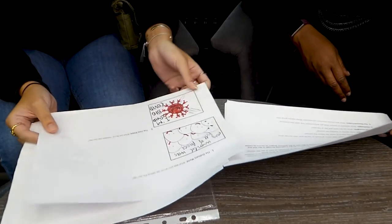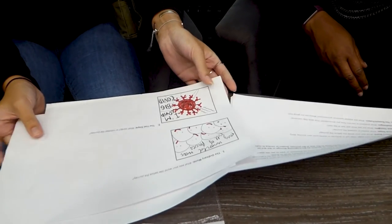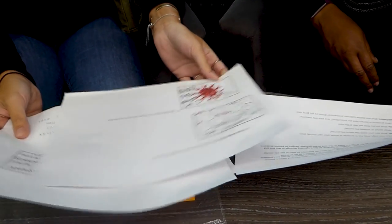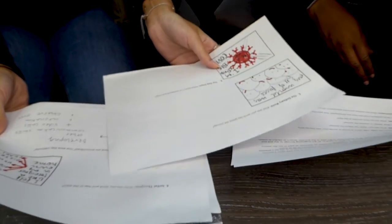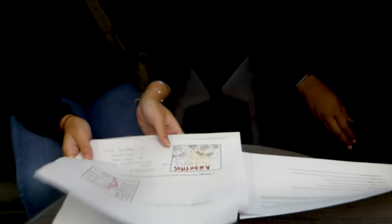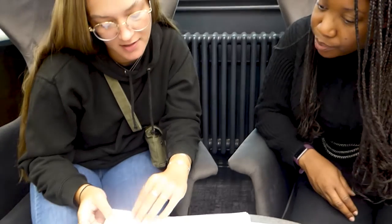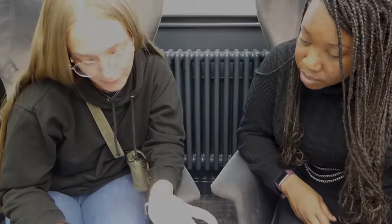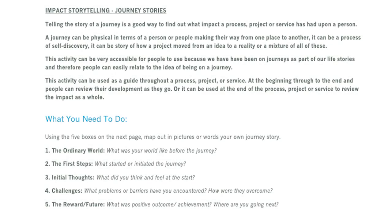The resources needed for this activity are paper printouts with five questions and boxes attached to each question. This allows the person to write or draw their thoughts and feelings about their personal story. The activity simply asks five questions.